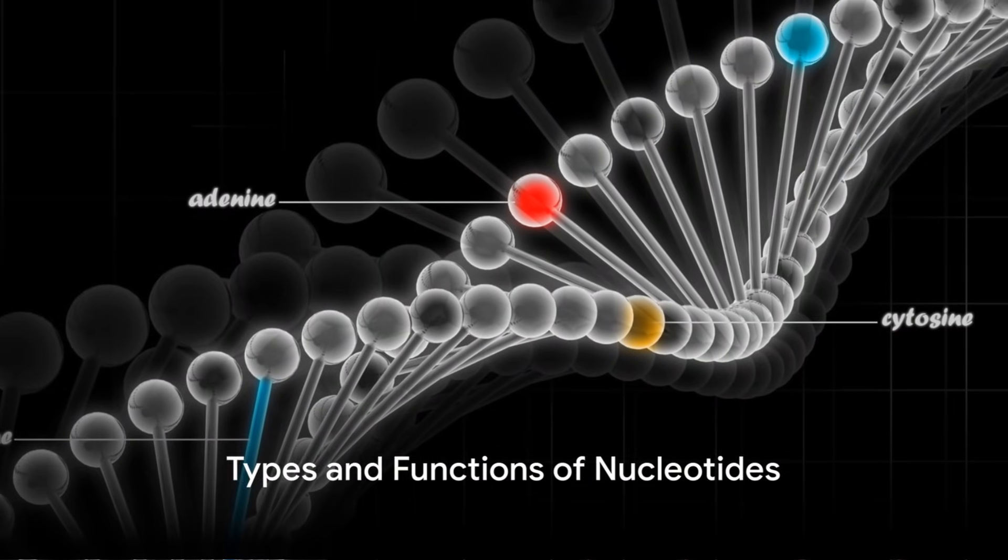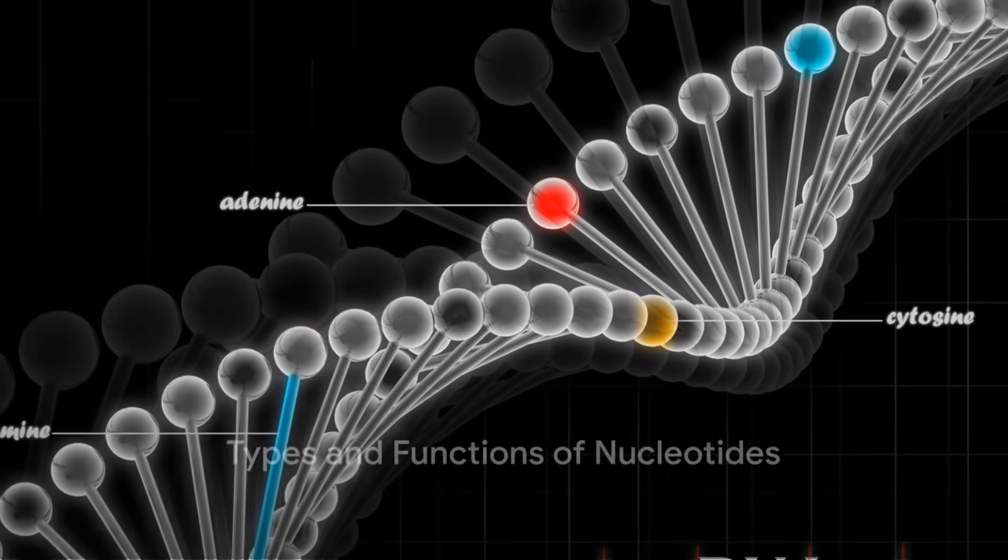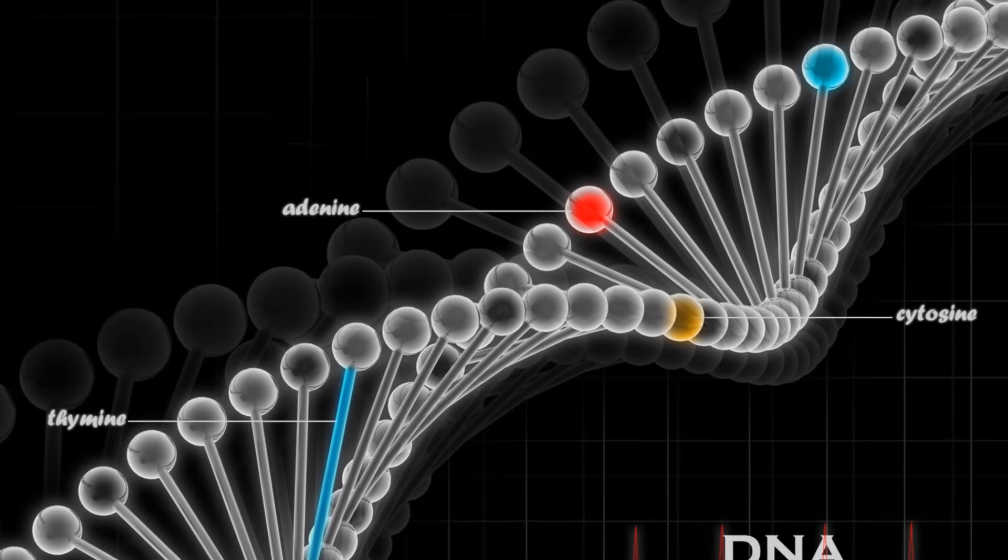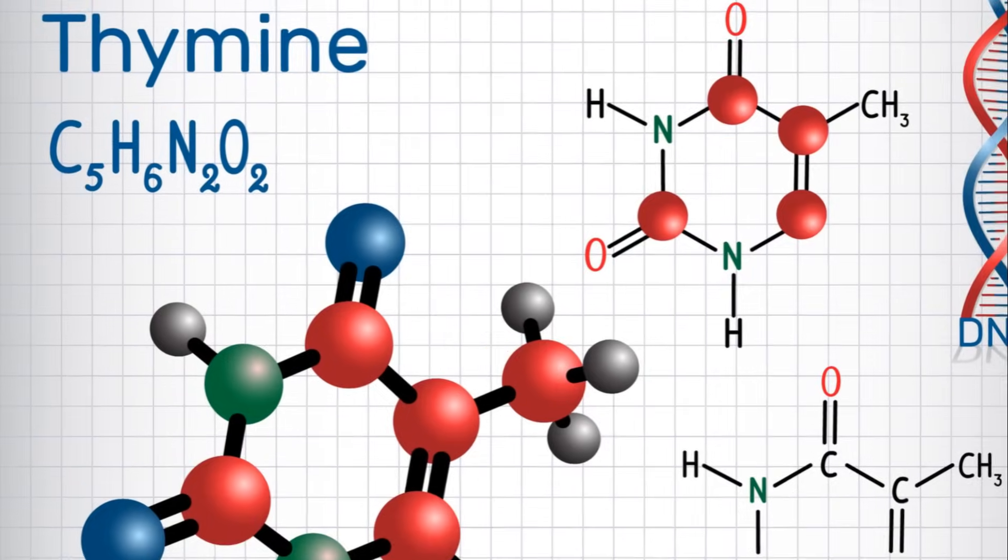There are four types of nucleotides, each with a unique role and structure. They are adenine, guanine, cytosine, and thymine in DNA, while RNA replaces thymine with uracil.